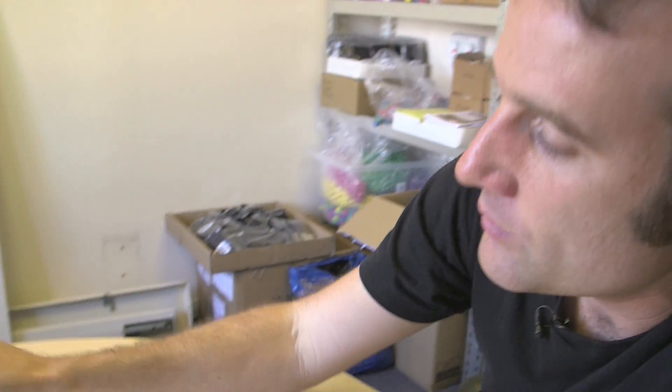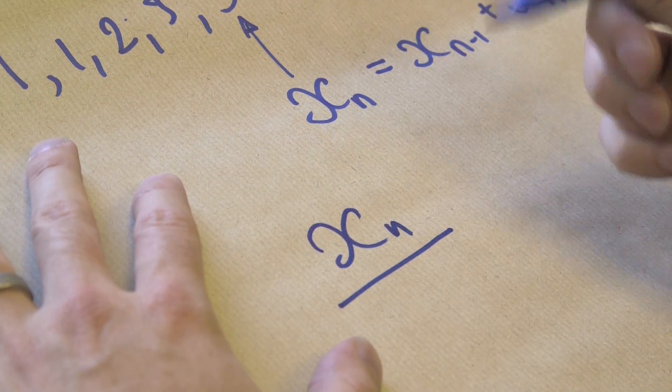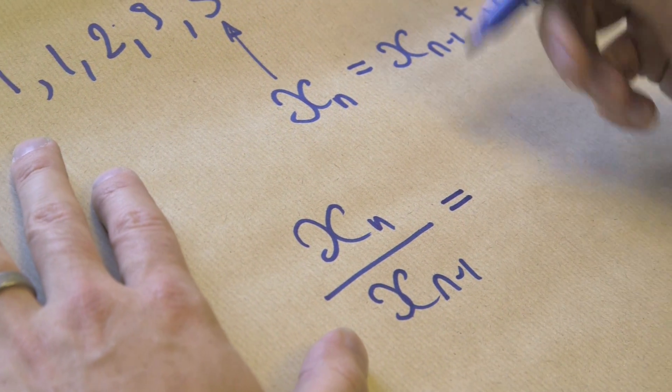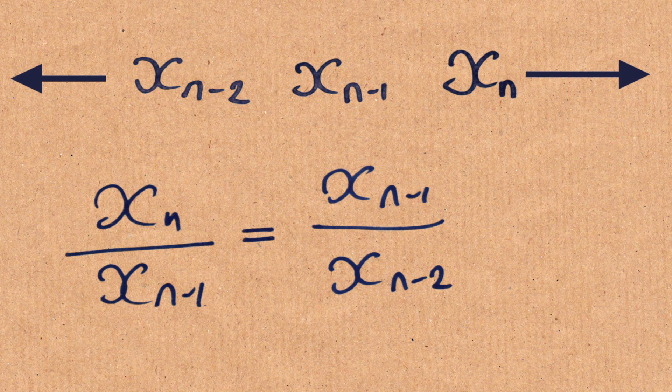So what we can say now is the ratio between x to the n and the one before that, which was x to the n minus 1, should equal the same as the ratio between xn minus 1 to the one before that, which was xn minus 2.